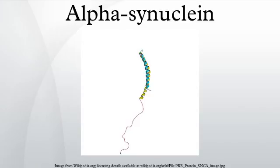Alpha-synuclein is a protein that is abundant in the human brain. Smaller amounts are found in the heart, muscles, and other tissues.